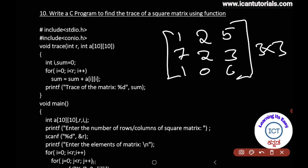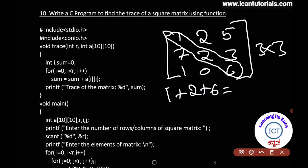The trace of a square matrix is the sum of the principal diagonal or primary diagonal elements. We pick the diagonal elements and add them: 1, 2, 6 — this equals 9. That sum is the trace of the matrix.